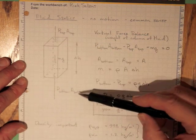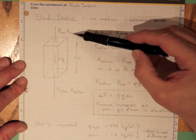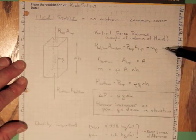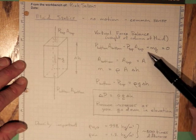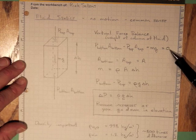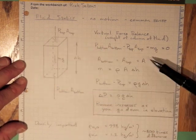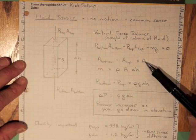So P bottom times A bottom minus P top times A top must be equal to Mg, or the difference in pressures minus Mg must be equal to zero. Now if this is a nice square box like I've drawn it, then the area on the bottom and the area on the top are both the same and they're just equal to A.